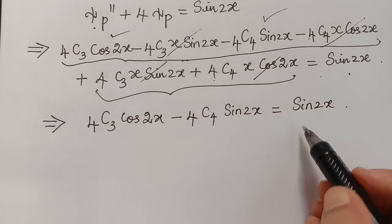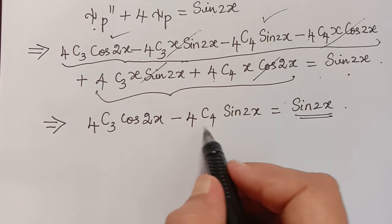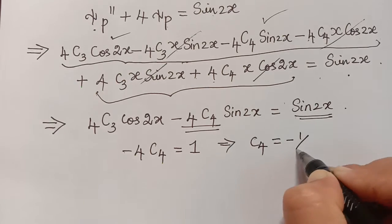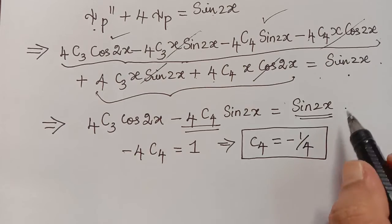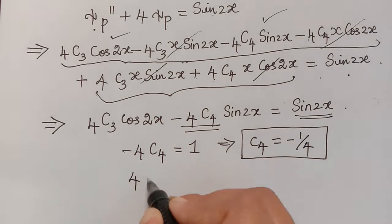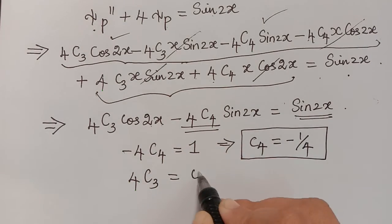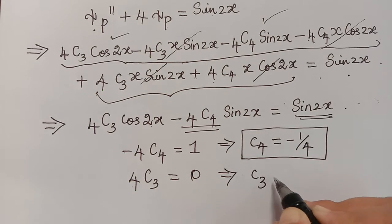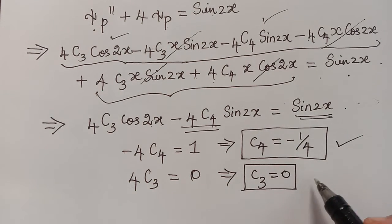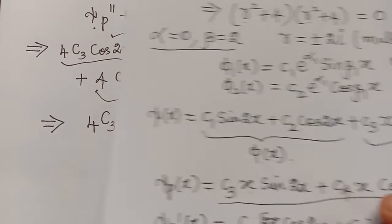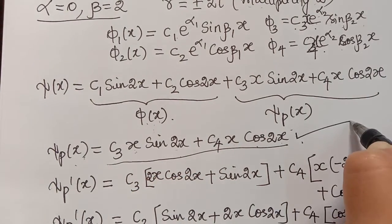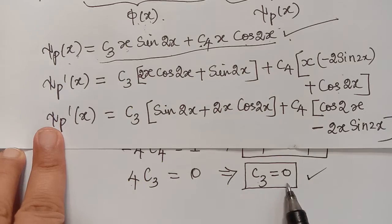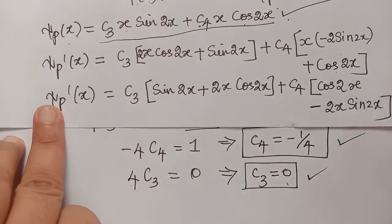Comparing both sides: the coefficient of sin2x on the left is −4c₄, and on the right it is 1, so −4c₄ = 1, giving c₄ = −1/4. There is no cos2x term on the right, so the coefficient of cos2x gives 4c₃ = 0, hence c₃ = 0.